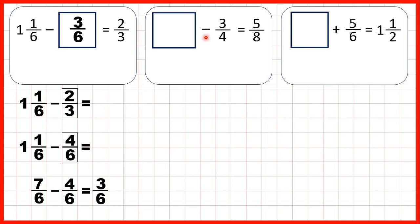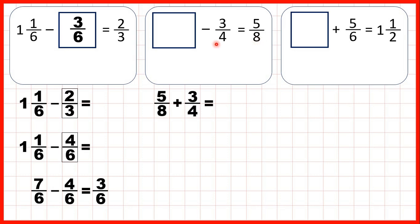Now something minus 3 quarters is 5 eighths. Here it's the minuend, or the first number of the subtraction, that's missing. Remember subtraction problems can be read backwards as addition problems, so to find our missing number we can add 5 eighths and 3 quarters.